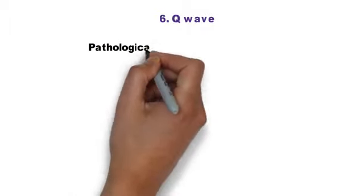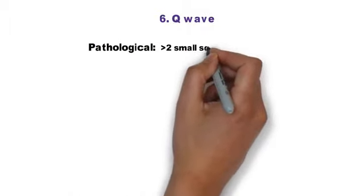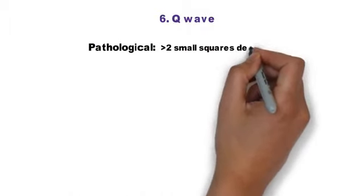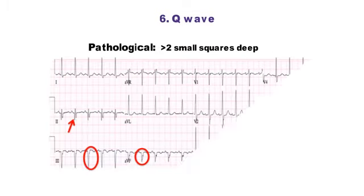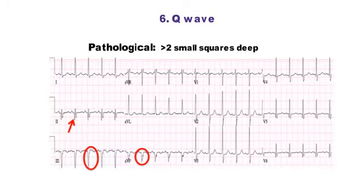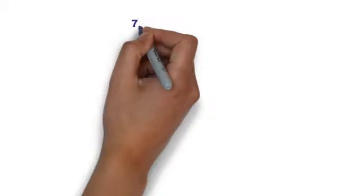Step 6 is Q-wave. A Q-wave is pathological if it is more than 2 small squares deep, and usually indicates current or past myocardial infarction. Deep Q-waves in inferior leads 2, 3, and aVF indicate old inferior wall MI.